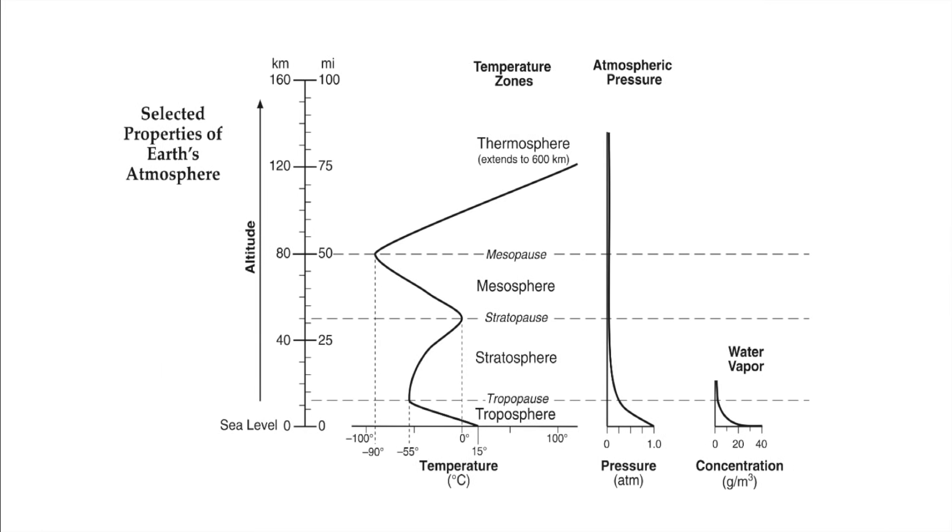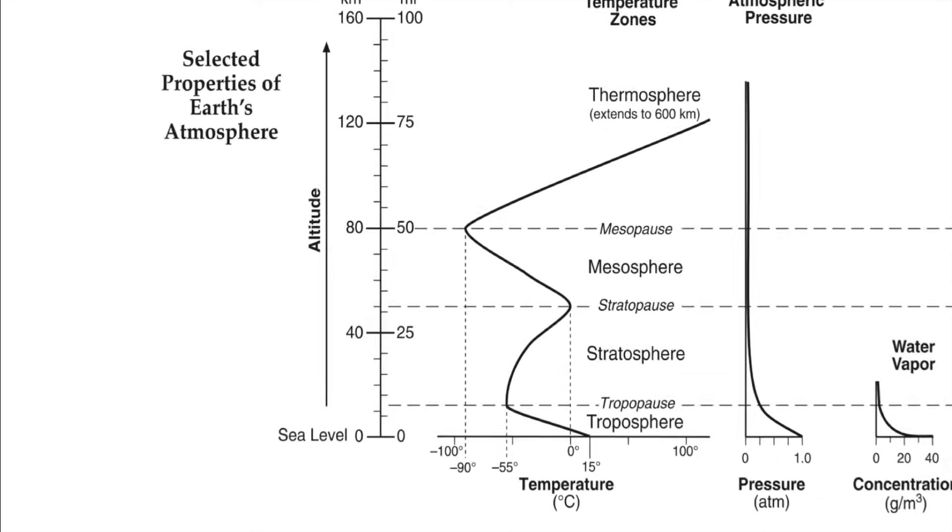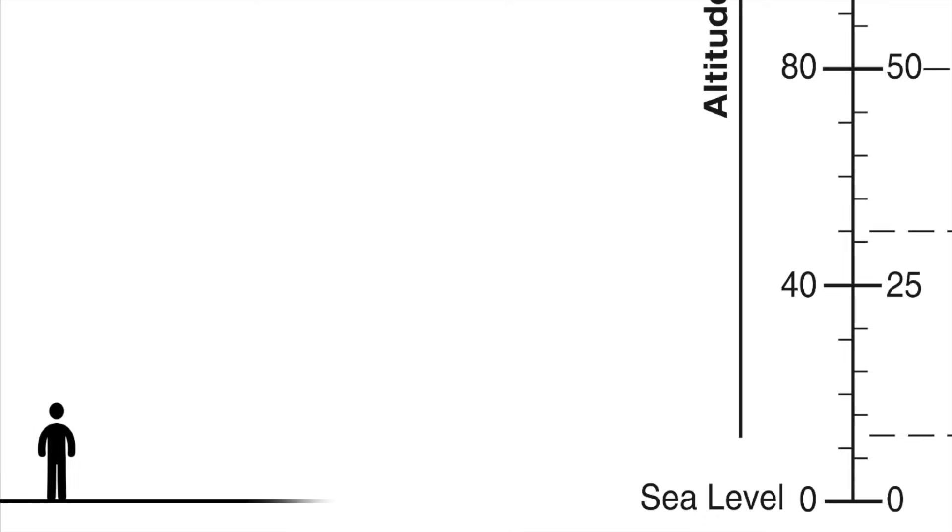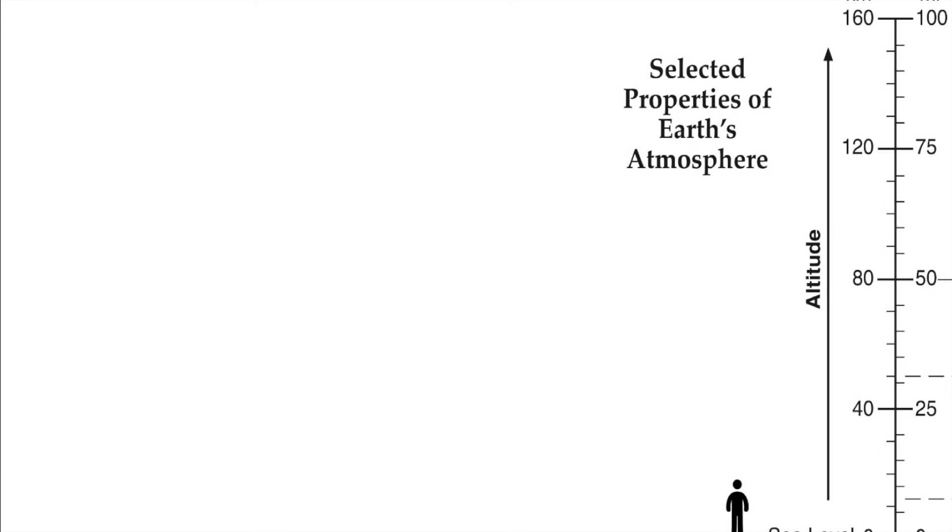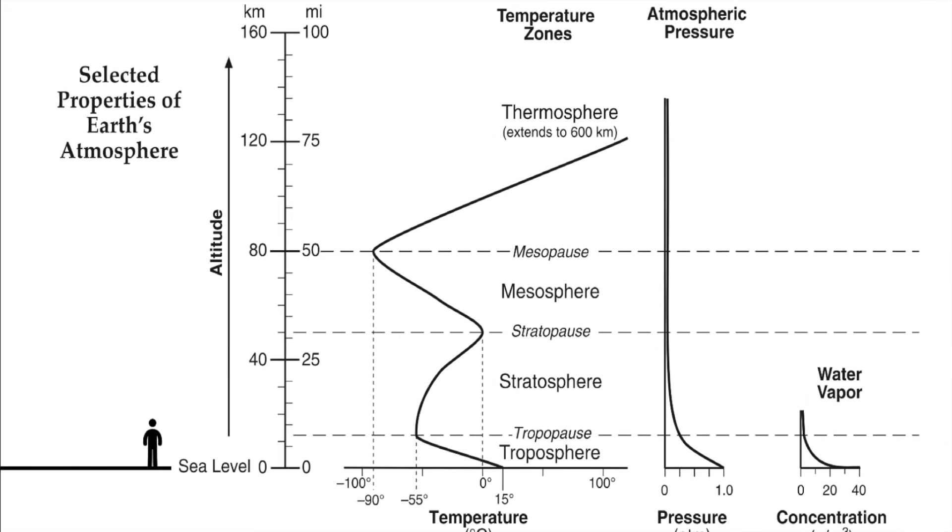In our reference tables, we also have this chart, the selected properties of Earth's atmosphere, which shows you the characteristics and layers of the atmosphere extending from the surface out into space. Imagine yourself standing at sea level and looking up through the atmosphere above you. The first thing we can do with this chart is measure altitudes using either the mile scale, which has increments of 5 miles, or the kilometer scale, which has increments of 10 kilometers. Be careful with those conversions.